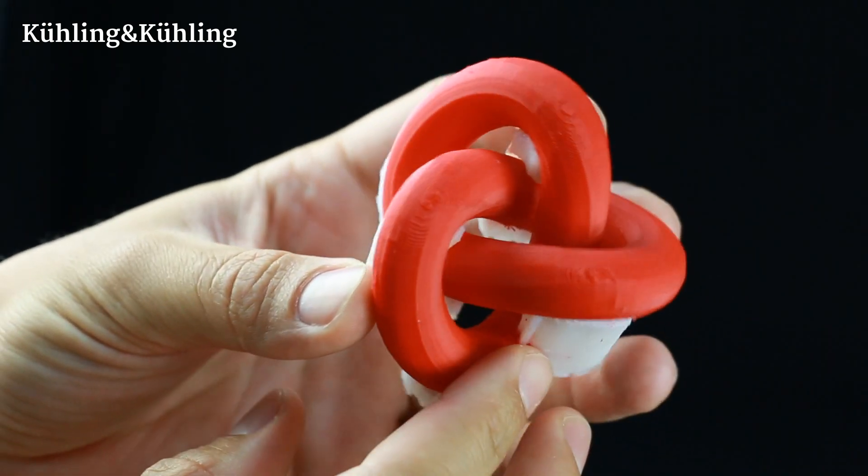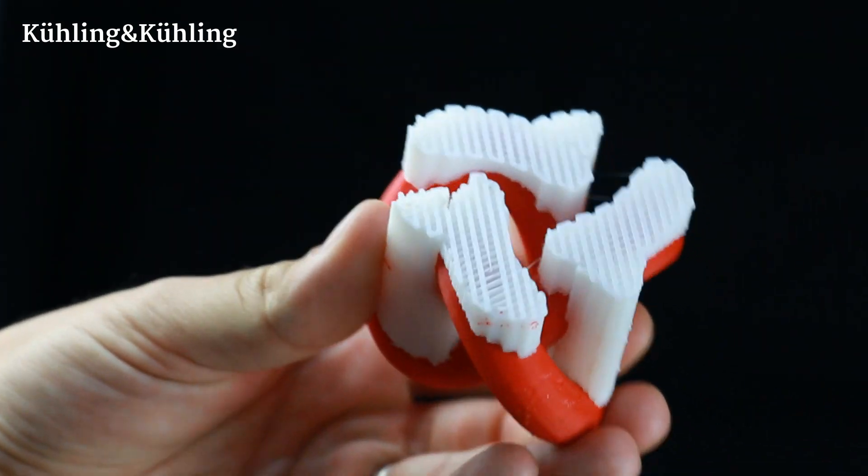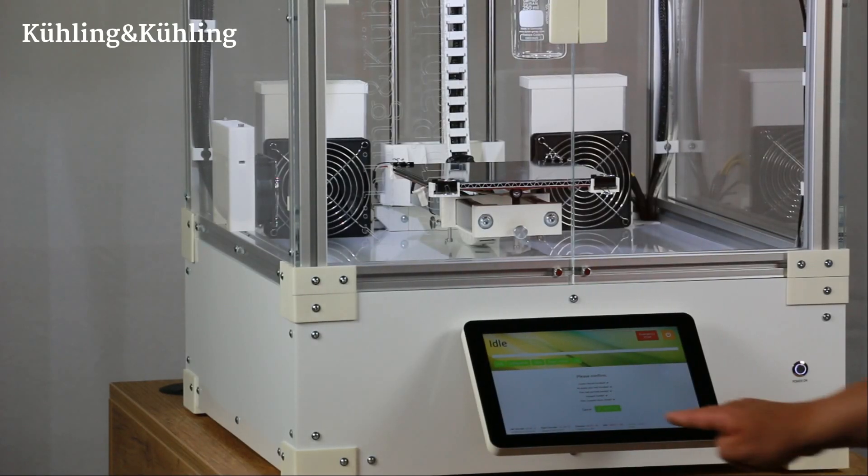Rather than manually removing breakaway support structures at the risk of accidentally damaging delicate parts, we are using our HIPS filament for the supports, which is later easily dissolved in limonene. Let's start a print.